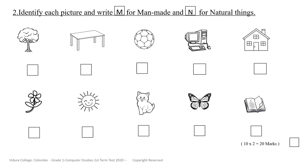Let's go to question number 2. Now children, look at these pictures. Identify each picture and write letter M for man-made and letter N for natural. Find only the man-made things and write letter M in the given box.